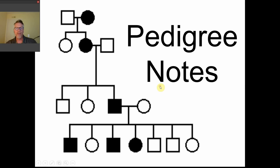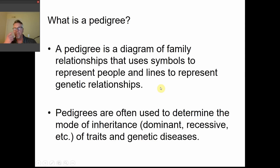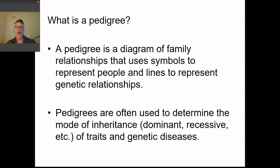A pedigree is basically a way of tracking relationships in a family. We use symbols to represent people and we connect the people with lines to show marriages or matings, and offspring or children. A lot of times pedigrees are used to determine what's called the mode of inheritance — that means tracking the way a trait is inherited from one generation to the next. So that's the purpose of the pedigree: to determine and track the mode of inheritance of a trait.